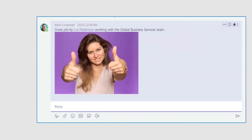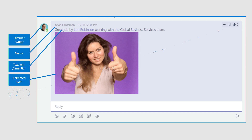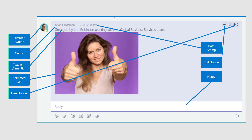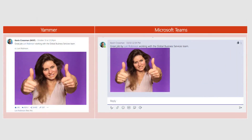Let's look at the post from Microsoft Teams. Pretty similar, isn't it? Circular avatar, the name, text with the app mention, the animated GIF, the like button, the date stamp, the edit button, and the reply. No sharing controls — but if you put these two things next to each other, they look pretty similar. It's easy to see why people might be confused about why you'd use one or the other, when in fact they both have strengths and weaknesses for their specific tasks.